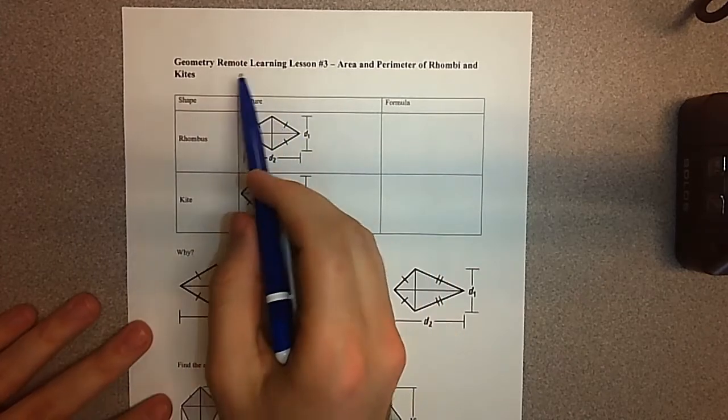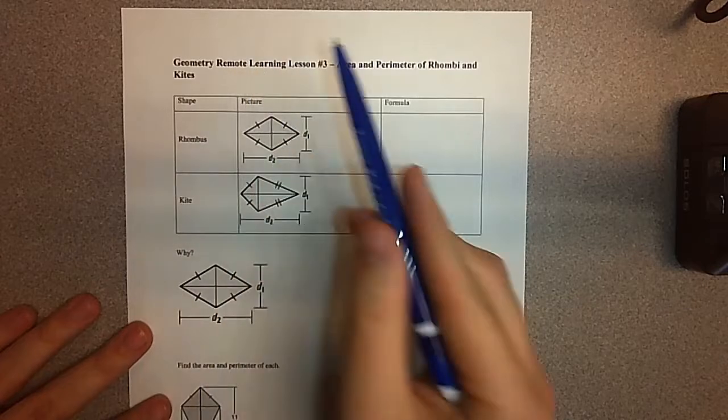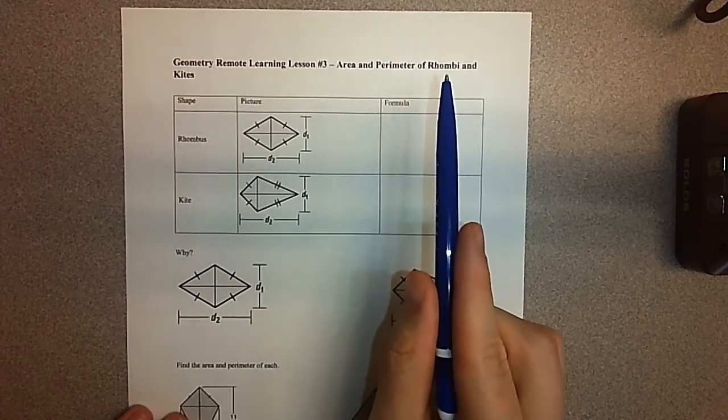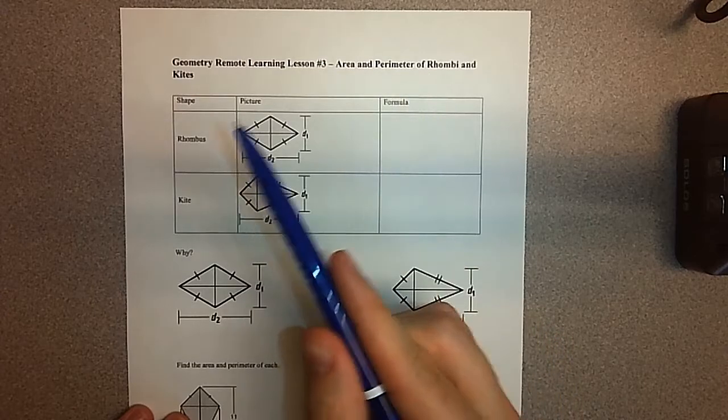Hey everybody, this is Mr. Keeney again, back for a third day of Geometry Remote Learning Lessons. We're going to continue area and perimeters. Today we're going to talk about rhombi, or just a rhombus, and kites.